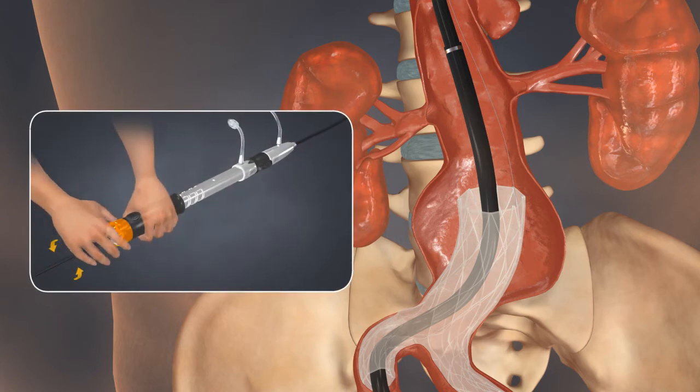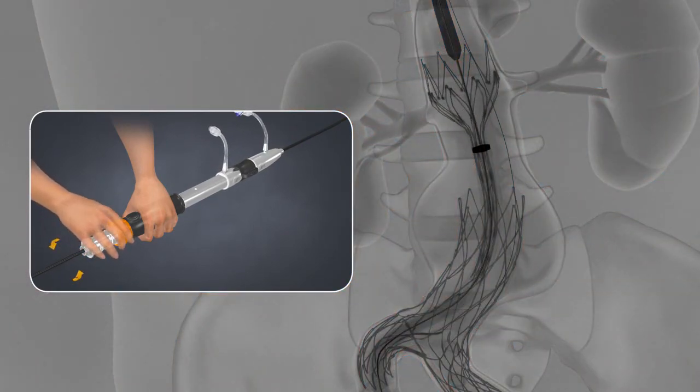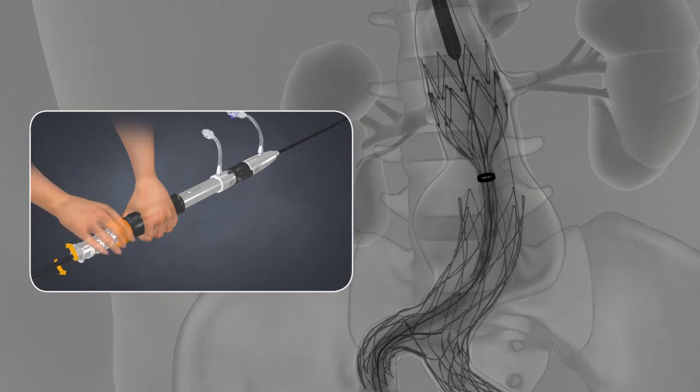To begin deployment, pin the delivery system handle and rotate the dial counterclockwise. Continue rotating the dial until the first covered stent segment is opposed against the aortic wall.